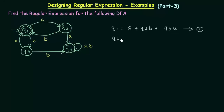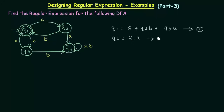Now let's do the same thing for equation number 2, that is for Q2. In Q2 we see that there is only one incoming transition, that is from Q1 with input A. So we can write it as Q1A and there are no more incoming transitions to Q2. This is equation number 2.